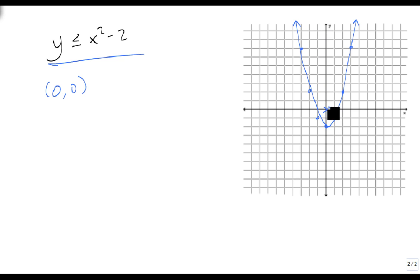If 0, 0 is true, then I shade this region. If it's false, there's only one other region to shade, so I can just jump straight to it, otherwise I just rule this one out.